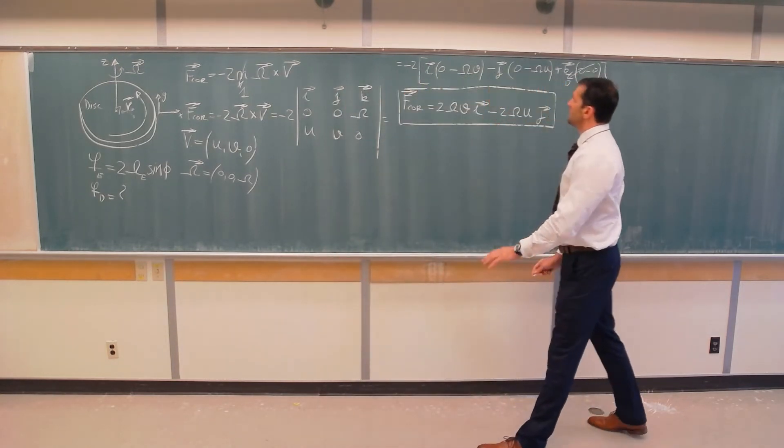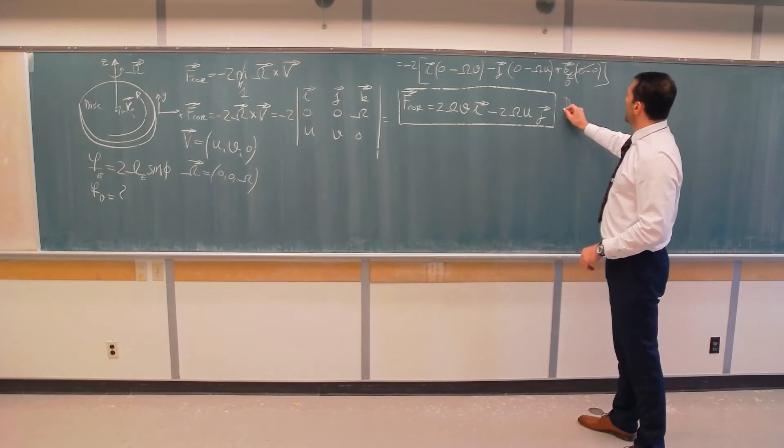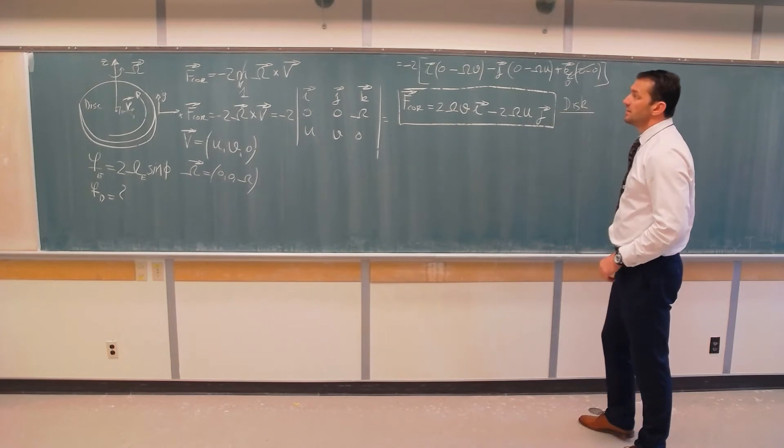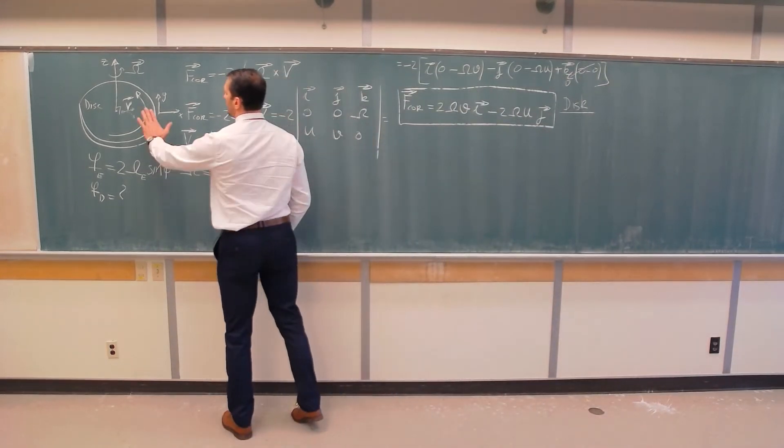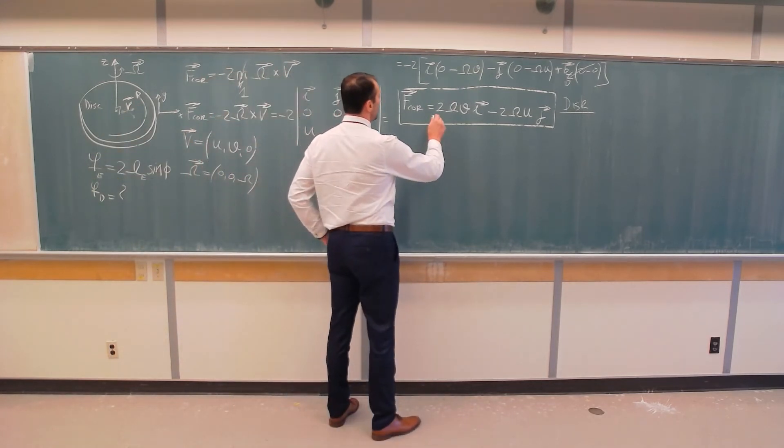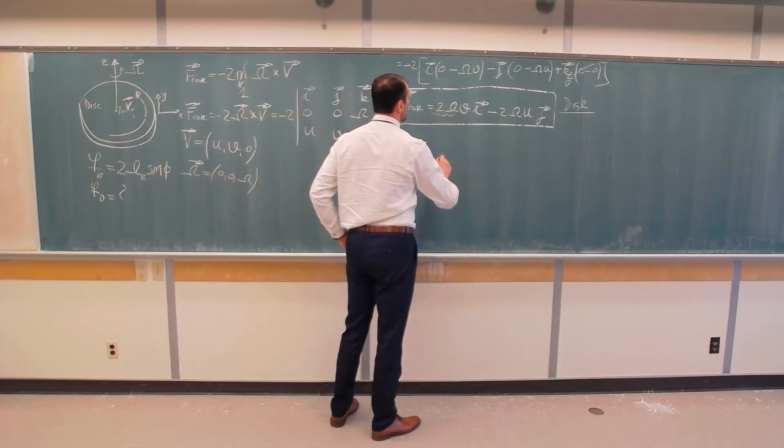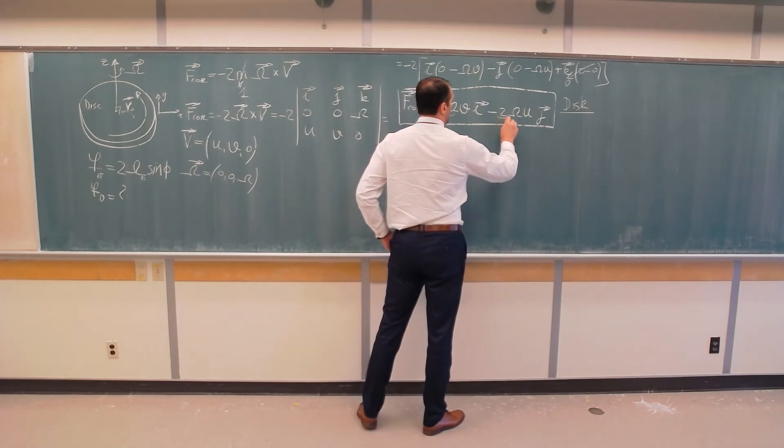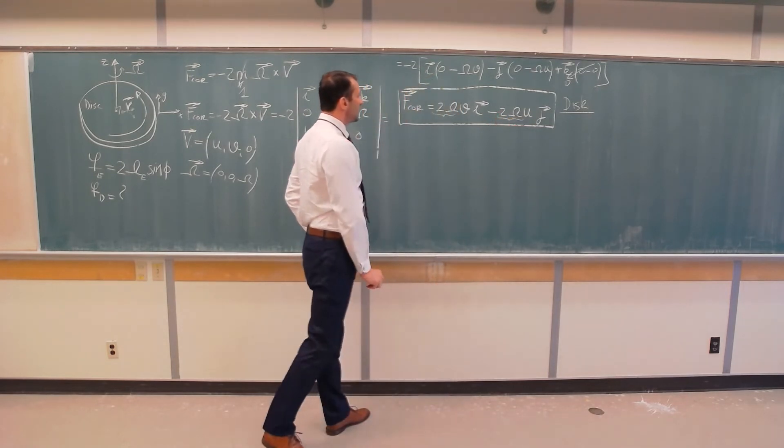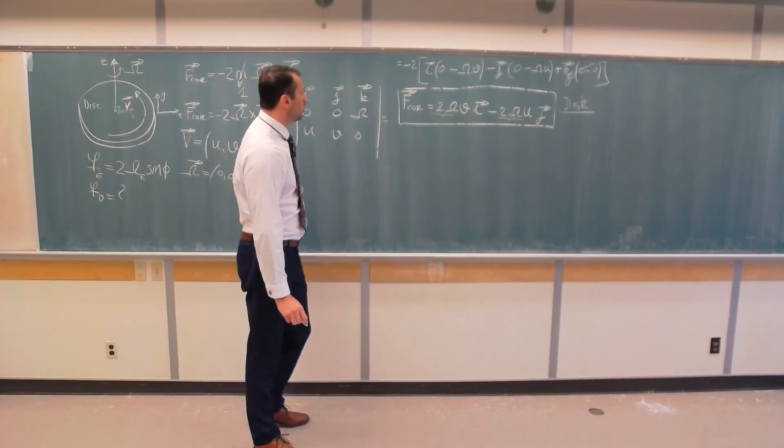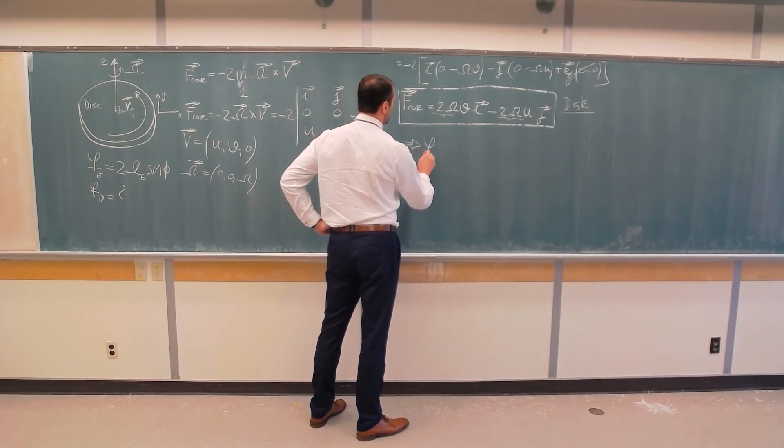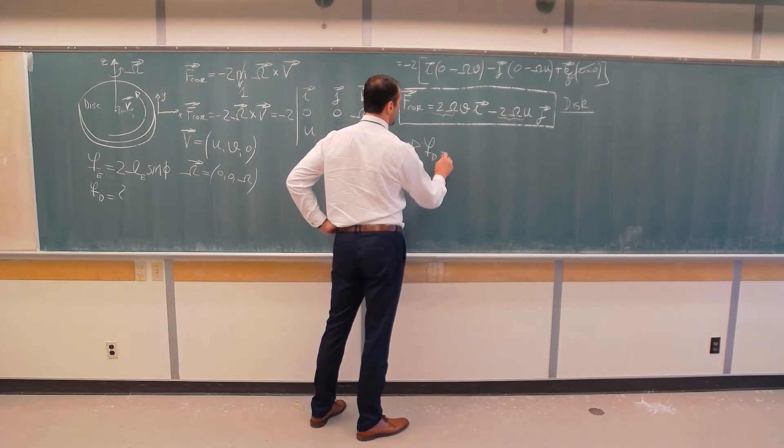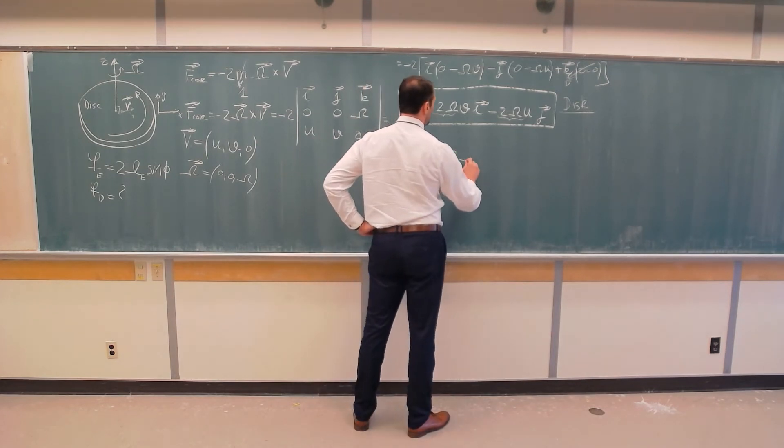So, this is expression for the Coriolis force on a 2D disk that is rotating with the axis perpendicular to the plane of the disk. And you can see that these factors next to the velocity components are what we call Coriolis parameter. So, from here, we see that Coriolis parameter for the disk is equal to two times omega.